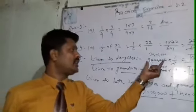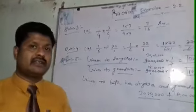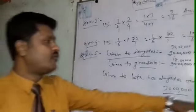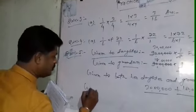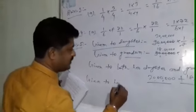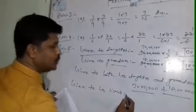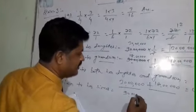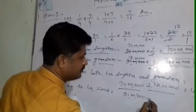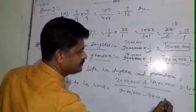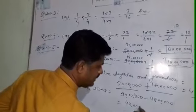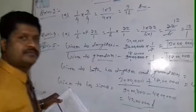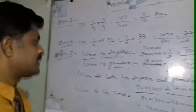Her total share is 90 lakh. From 90 lakh, 48 lakh is given to her daughter and grandson. So the rest will be given to her sister. Amount given to her sister equals 90 lakh minus 48 lakh, which equals 42 lakh. This is your answer.